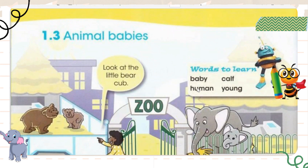Hi guys, welcome back to my channel StudyBee. Here I am after a very long time with a new lesson of science — animal babies. We ended at 1.2, which is environment, and now we have the new chapter of animal babies. In this we are going to learn some new names of animal babies. The animal baby names are not the same as their parents — they have different names. We are also going to know how many babies each animal usually carries. So let's start.